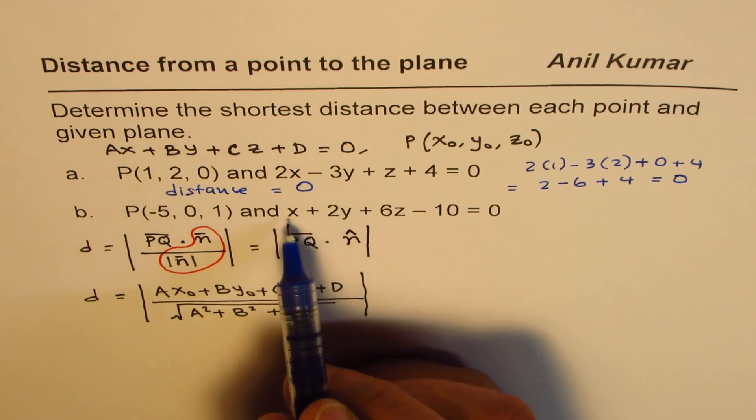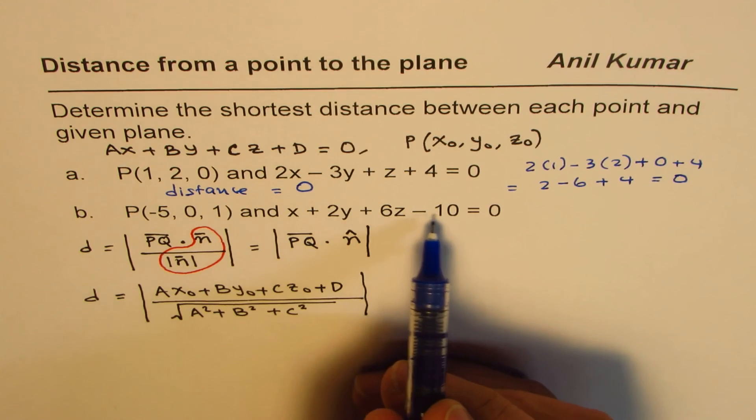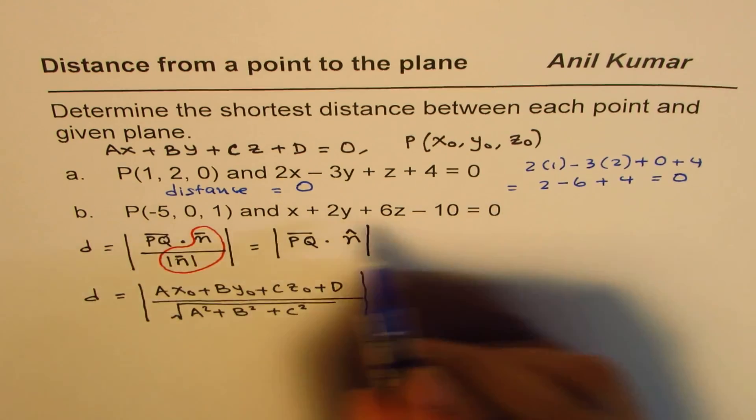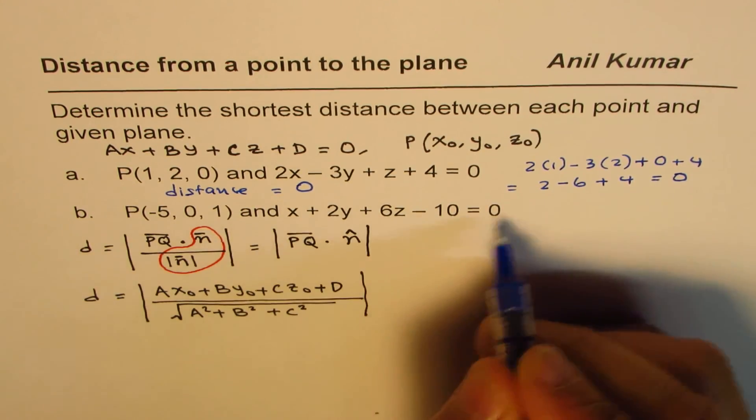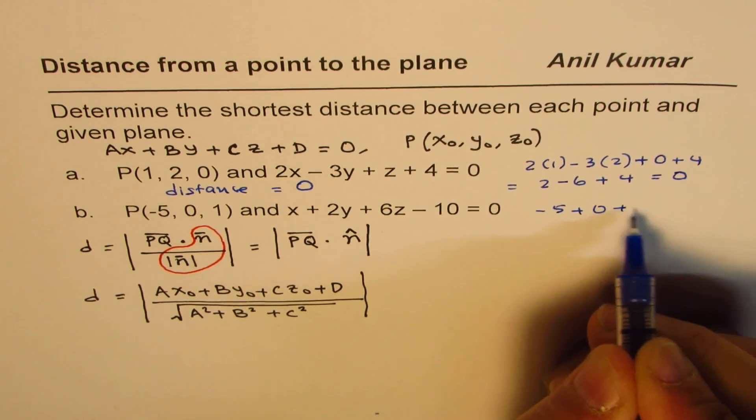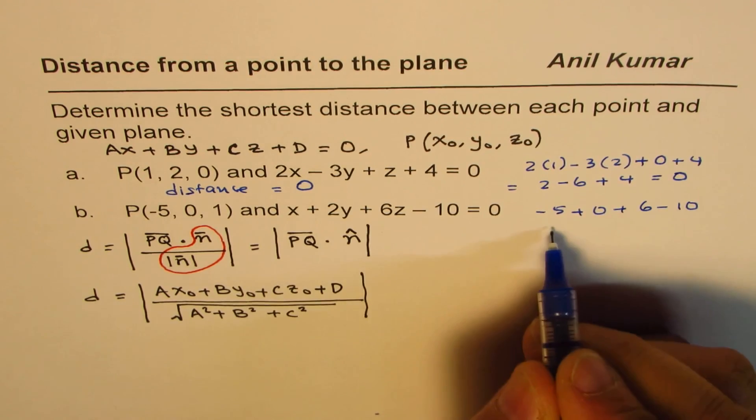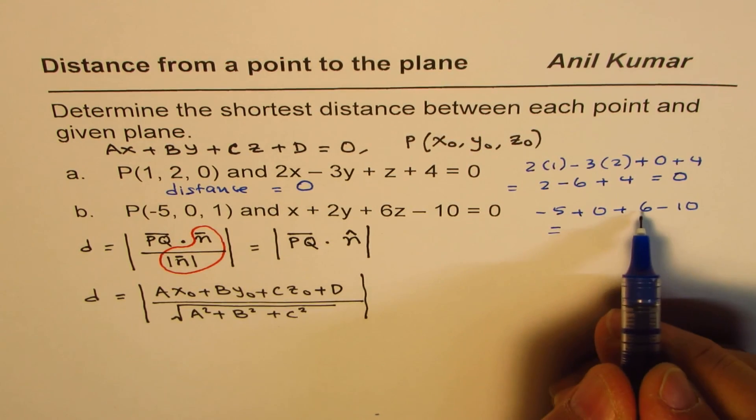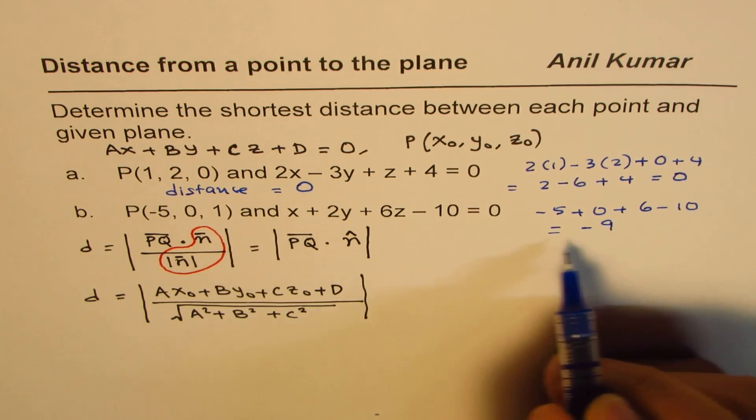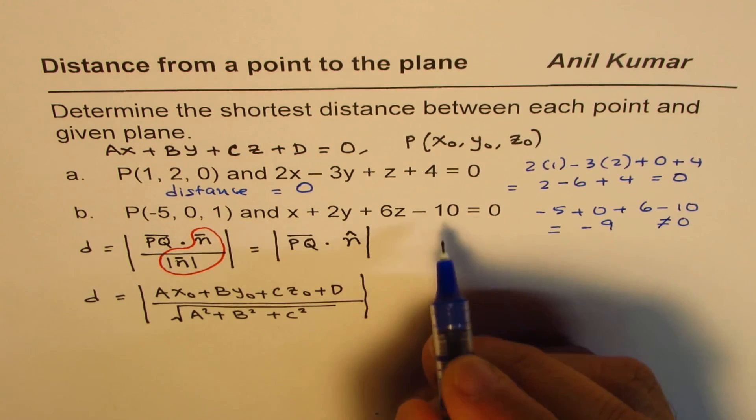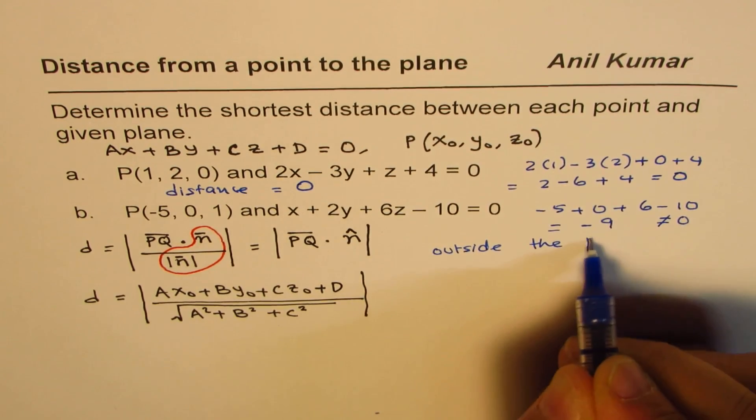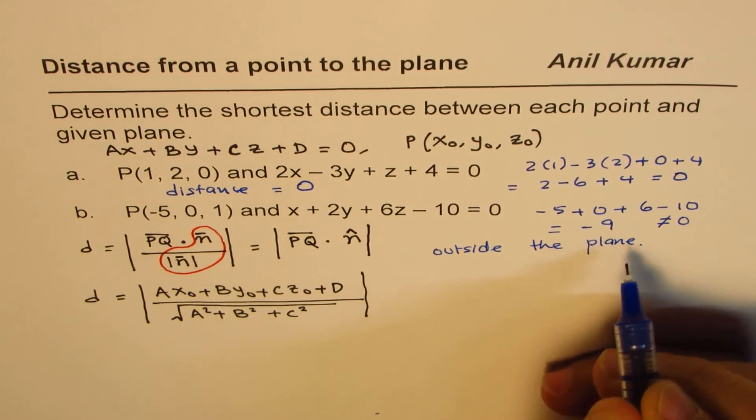So, the next one here is x plus 2y plus 6z minus 10 equals to 0. We can substitute this point. So, if I substitute this point, I get x is minus 5, minus 5 plus 0 plus 6 minus 10. And then let's find what this is. Minus 5 plus 6 is 1, and take away 10 is minus 9. Now, this is not equal to 0. So, this point is outside the plane.